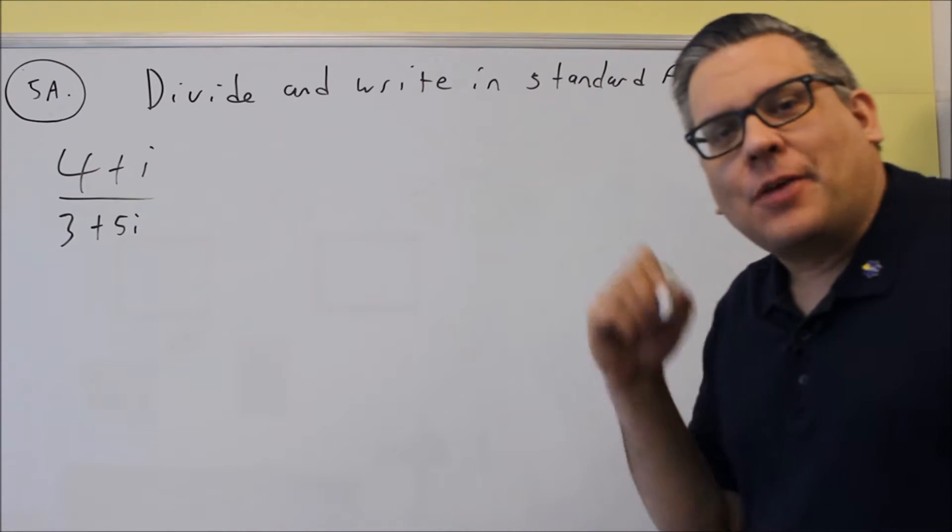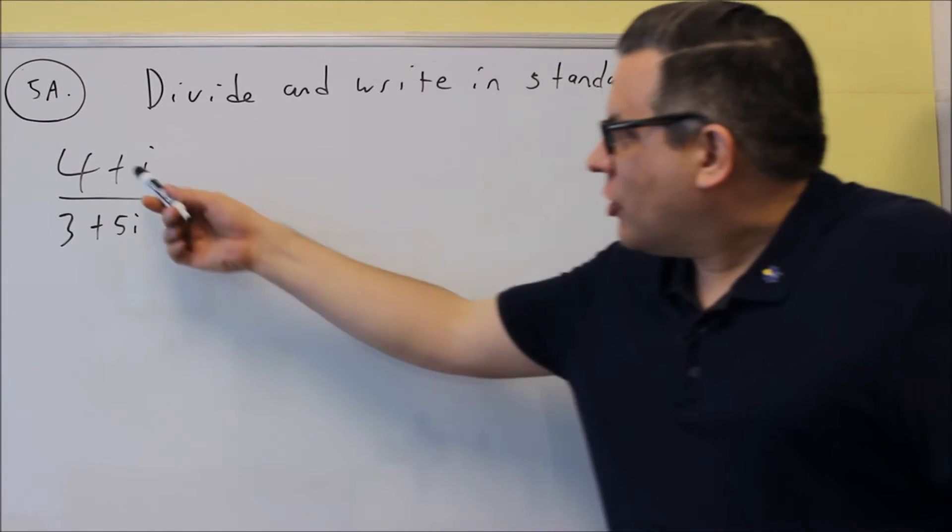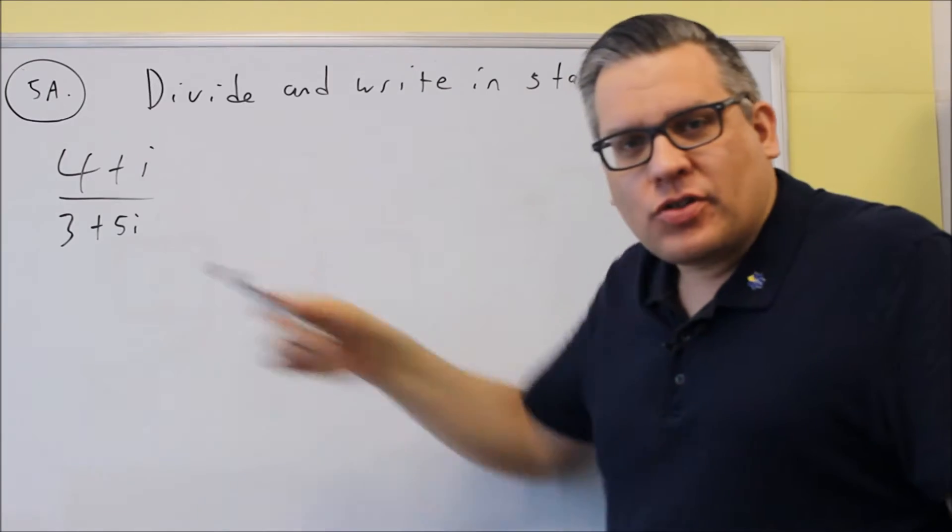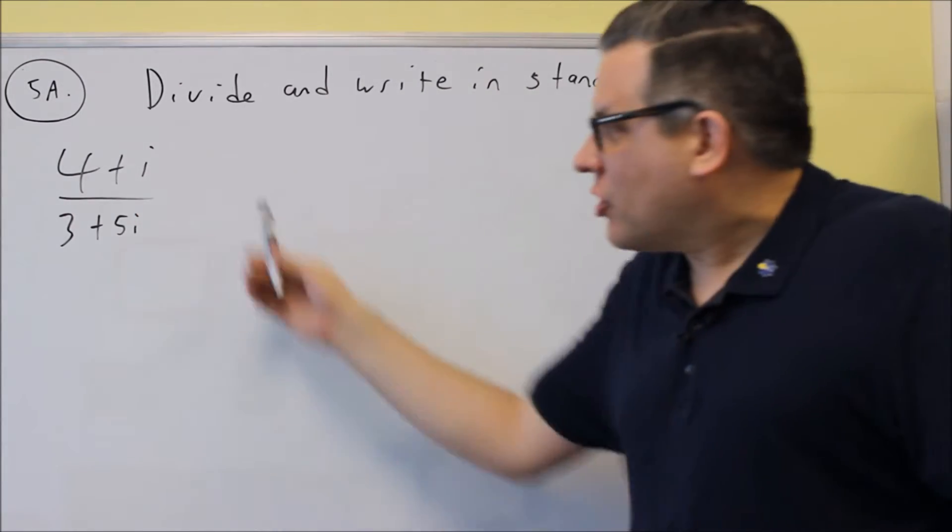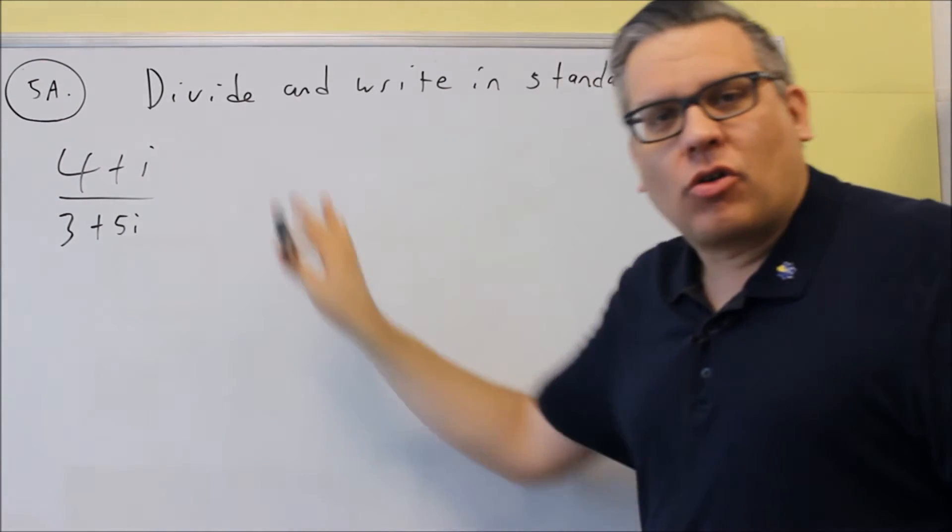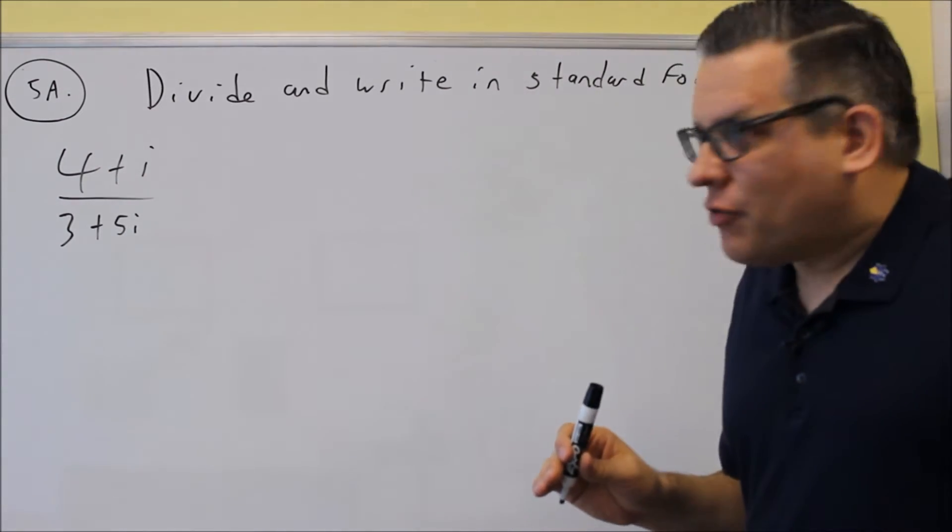So standard form is the a plus bi form. Each of these top and bottom ones individually are written in standard form, and this is how you want to write your answer. We can't leave it in that form because the whole thing is not standard form.